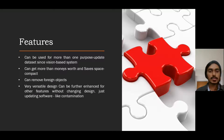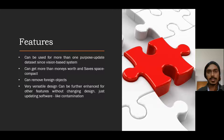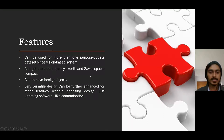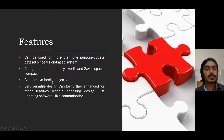The features of the design include: it can be used for more than one purpose by upgrading the data set, since it is a vision-based analysis system. This means it can be used for sorting more than just potatoes — it can be used for any other produce as well. And since it can be used for more than one purpose, you can get the money's worth and save space, since the design is smaller compared to conveyor belt systems. It can also remove foreign objects from the sorting mechanism, like rocks and other foreign objects.